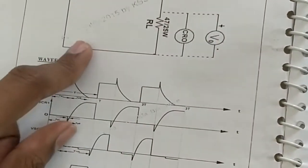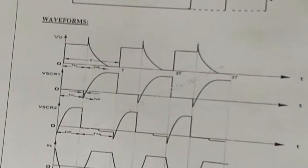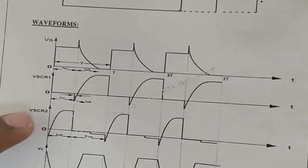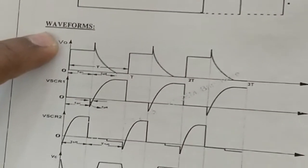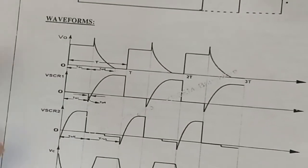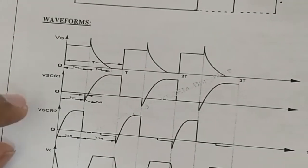Apart from that the circuit, the waveforms and the calculation remains the same. The only thing here is that instead of measuring across the load V0 and across the first SCR, you will also be measuring across VSCR2.